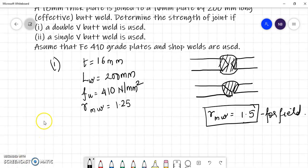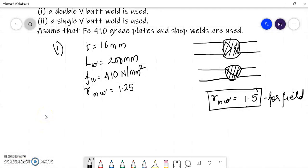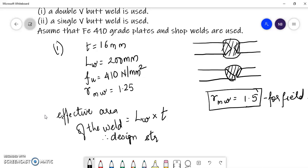To find out the effective area of the weld, we multiply the effective length and the throat thickness. The design strength of the weld is given by the effective area multiplied by fu upon root 3, and since it's the design strength we use the partial safety factor gamma Mw.